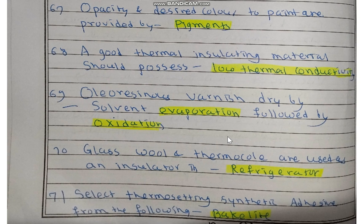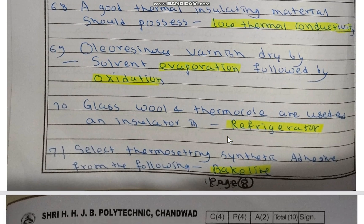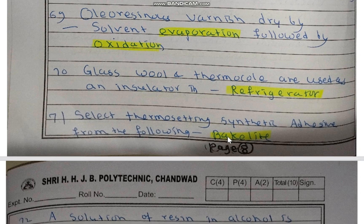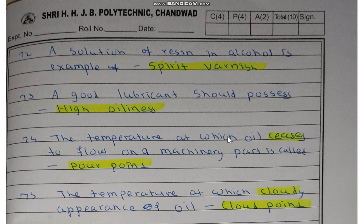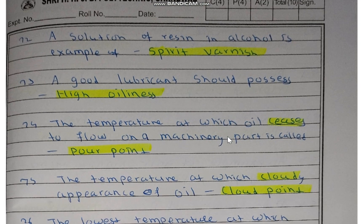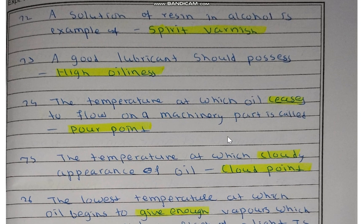Oleo-resinous varnish dries by solvent evaporation followed by oxidation. Glass wool and thermocol are used as insulators in refrigerators — they are used in combination as insulators. For thermosetting synthetic adhesive, the answer is Bakelite, also known as phenol formaldehyde. A solution of resin in alcohol is an example of spirit varnish.